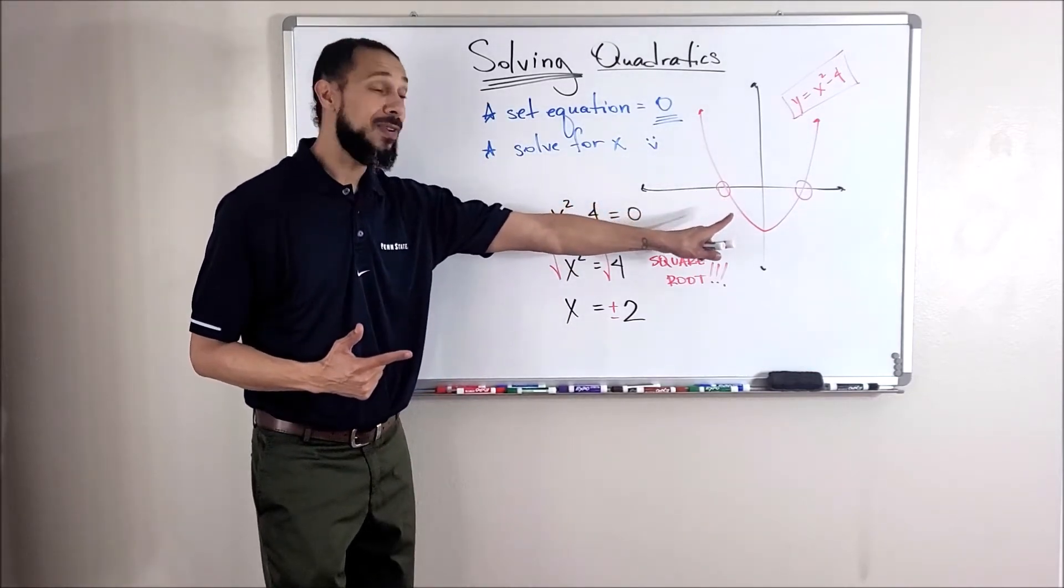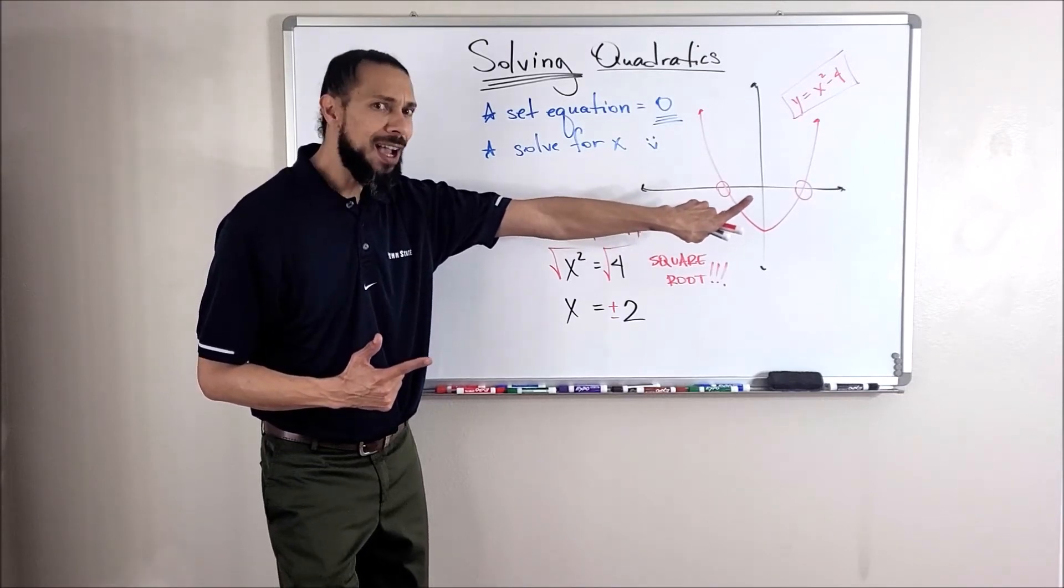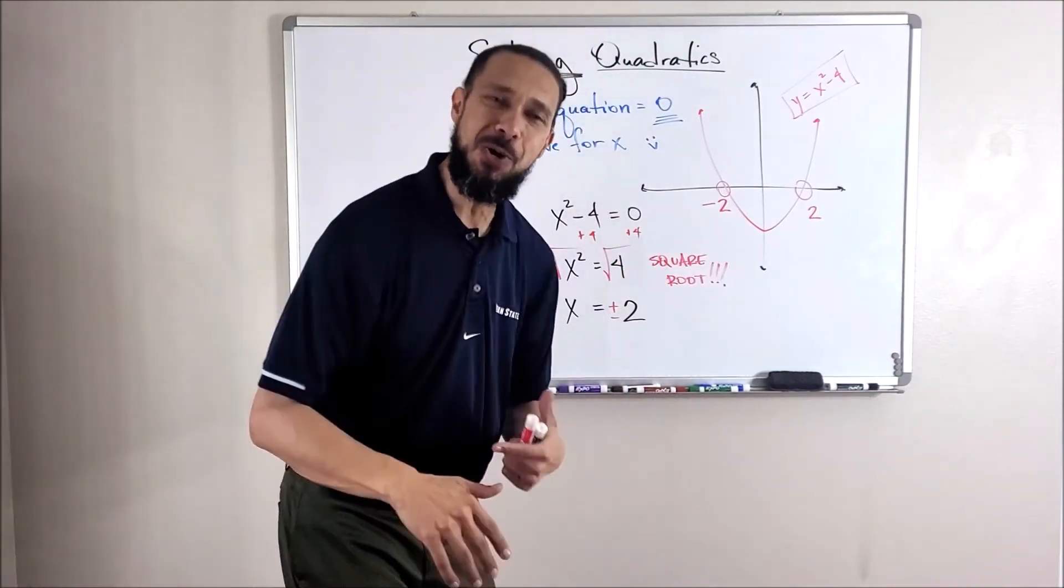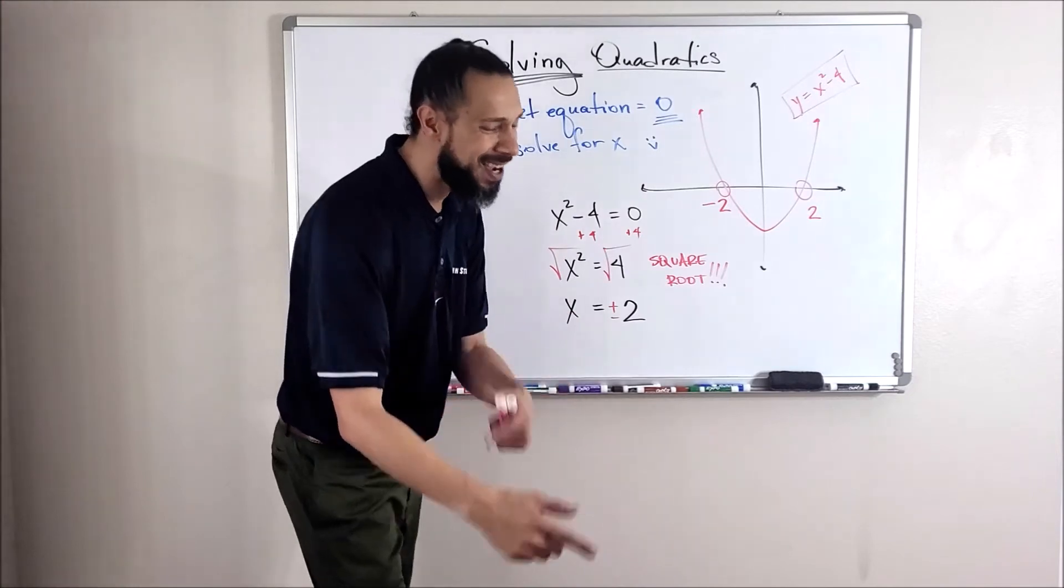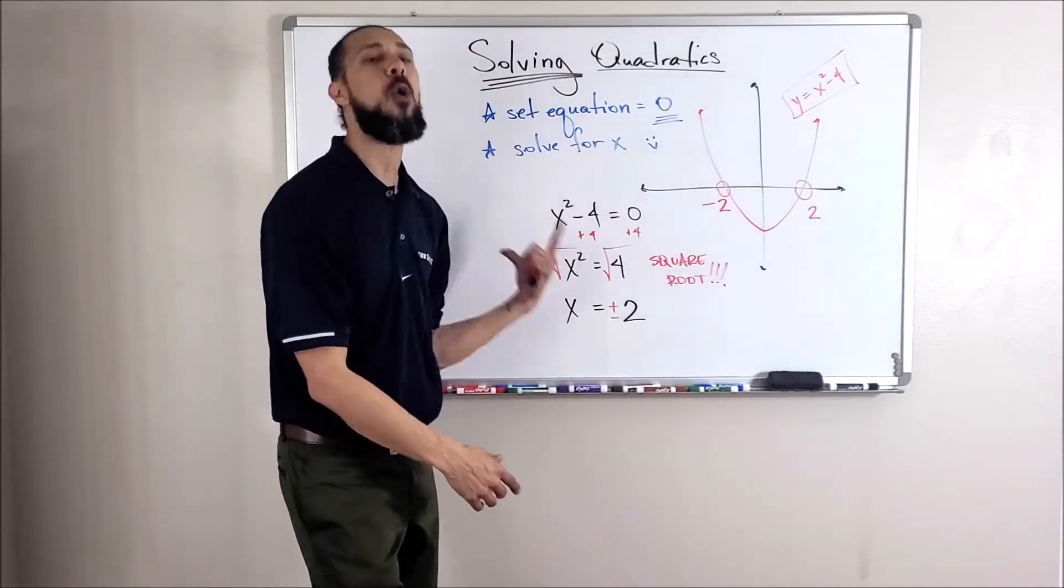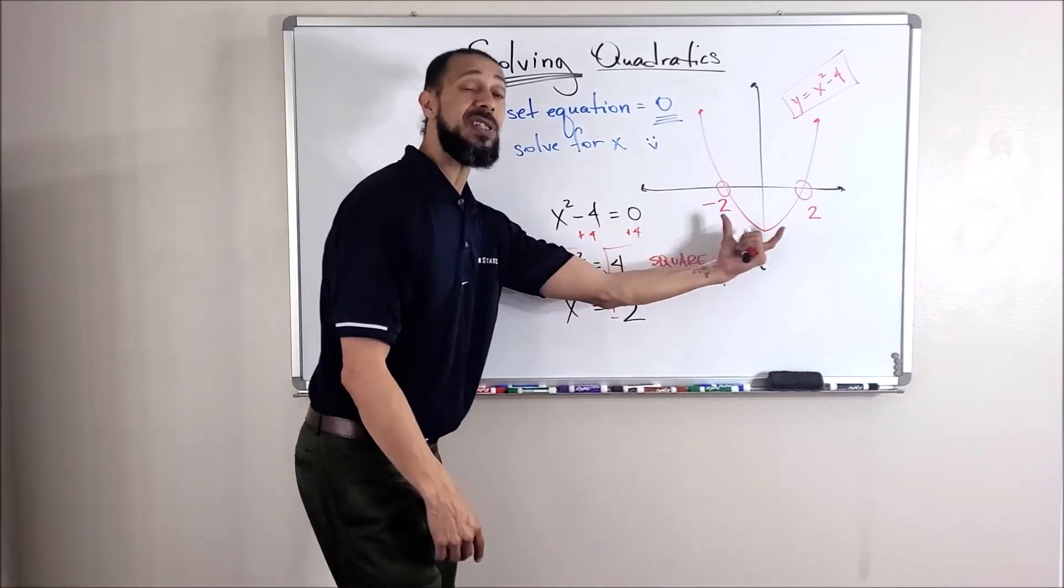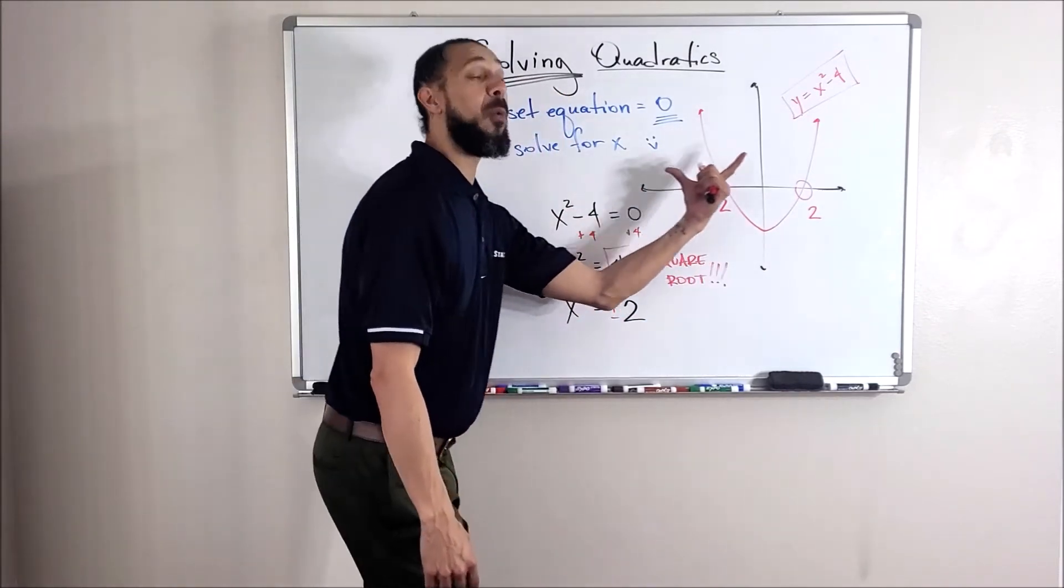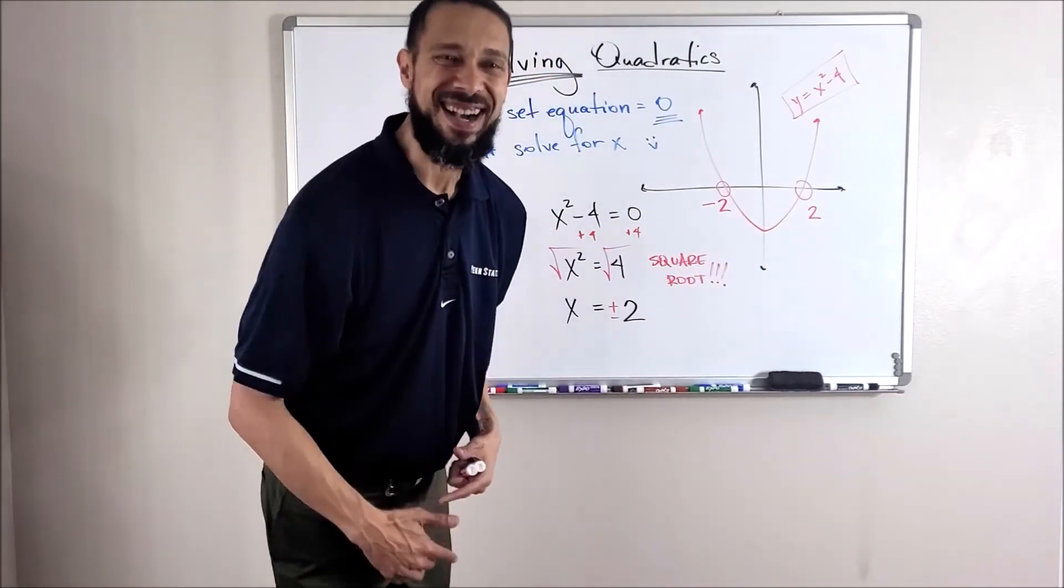So if I look at my graph, aren't there two places where it crosses the x-axis? Guess what those two numbers are? 2 and negative 2. Are you starting to turn that circle around? That's exactly what all of this means. The solution to this equation, which is the equation of this graph, these two numbers are where the line crosses the x-axis.